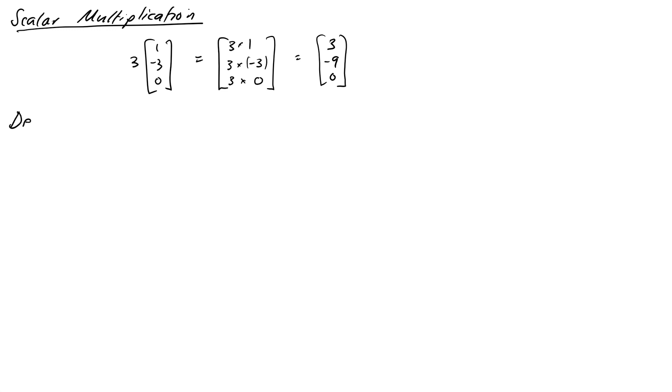Just like with addition, we can write ourselves out a formal definition for this too. And our definition says, again, we'll set up the things we need and then we'll actually give the definition. So we'll say, let u be a vector in Rn and let a be a scalar, so a member of the real numbers. Then a times u is just a times the vector u1, u2 through to un, which is then equal to au1, au2, all the way through to aun.